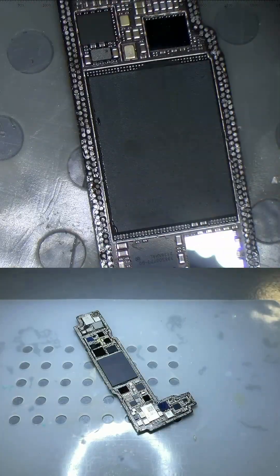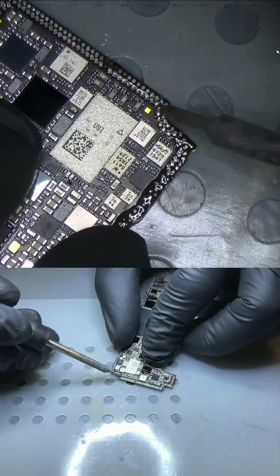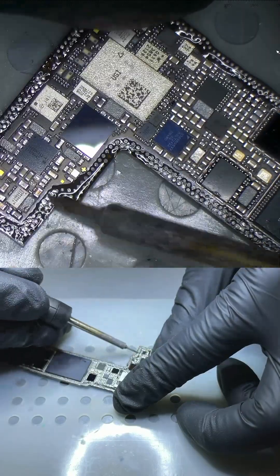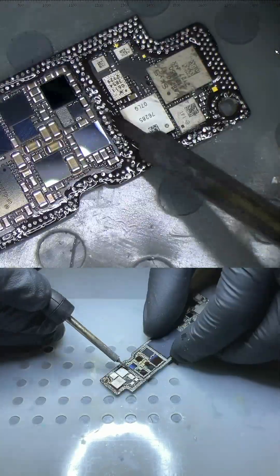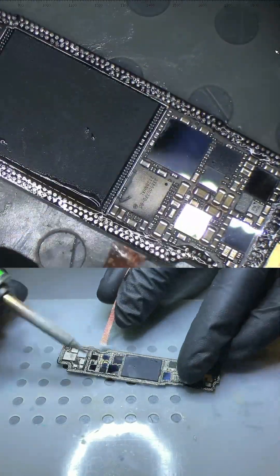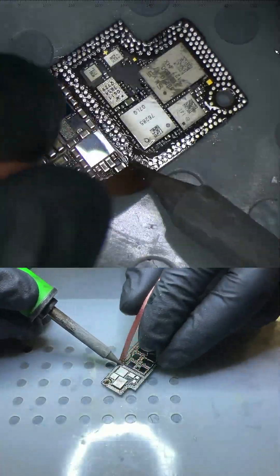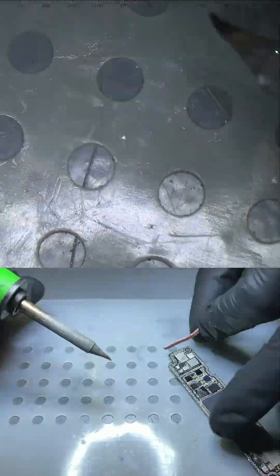We apply flux and solder all around the perimeter, which will facilitate the cleaning of the traces once we use the solder wick. Now we go around the perimeter with the solder wick, making sure all the traces are clean and flat.